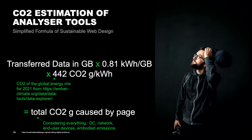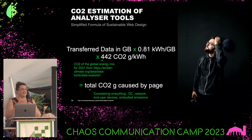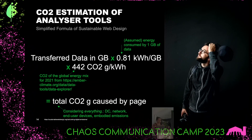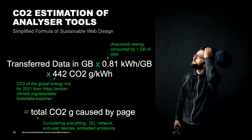The CO2 intensity is the intensity of the global energy mix. We could use any other number for local energy mix, or say if we have a data center that we are running completely on coal, then we can of course substitute our own numbers here. What is really curious is this number of 0.81, which is the assumed consumption of energy caused by transferring one gigabyte of data. And I'm going to go into a little bit more detail in the next slide.